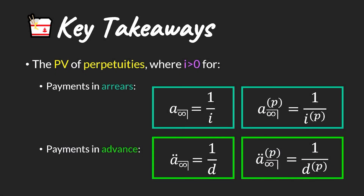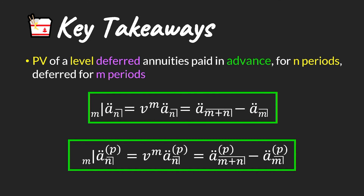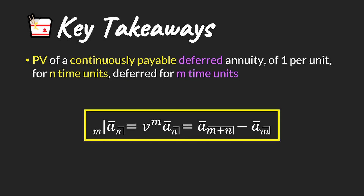For key takeaways: the present value of perpetuities with interest rate greater than zero — for payments in arrears (annually or pthly) we use i or i^(p) in the denominator; for payments in advance we use d or d^(p). For deferred annuities paid in arrears for n periods deferred for m periods, we have formulas for both level and pthly annuities. Similarly for annuities paid in advance and for continuously payable deferred annuities.